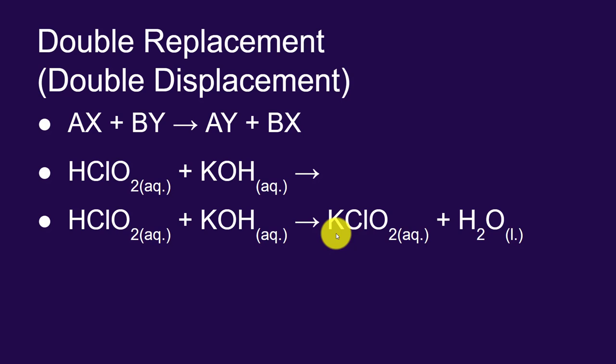And so you end up getting potassium chlorite as a solution, and then hydrogen hydroxide. Now remember, hydrogen hydroxide is just water.